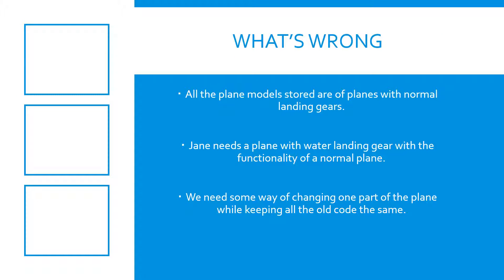Unfortunately, all of the plane models stored on the system are of planes with normal landing gears, and Jane needs a plane with water landing gear, but one that has all the functionality of a normal plane.